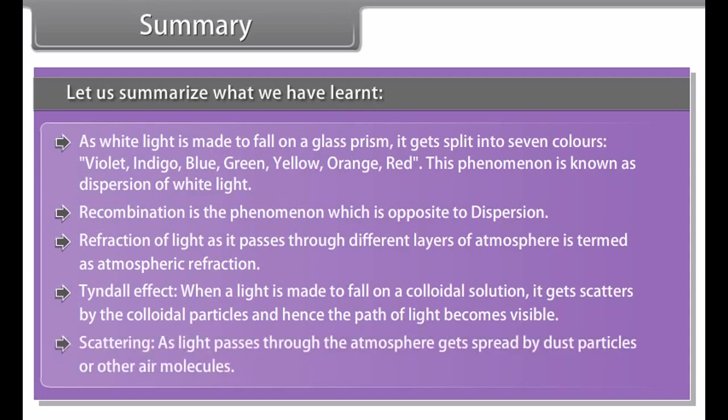Let us summarize what we have learned. Human eye has a crystalline lens and it works like a camera. Various parts of eye are pupil, cornea, iris, crystalline lens and retina.